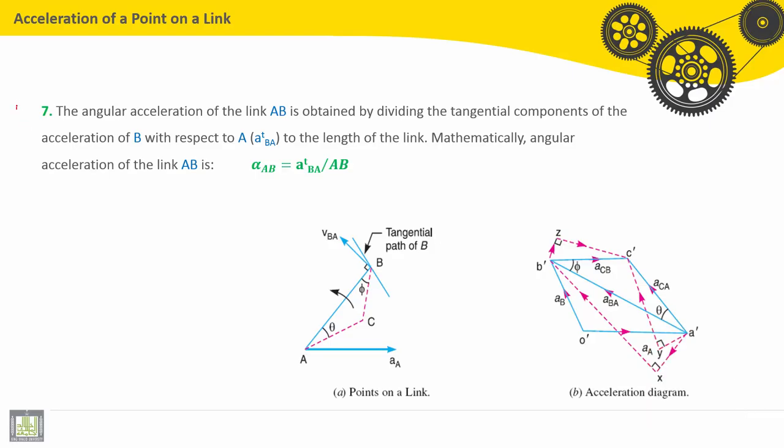Last step, number 7: The angular acceleration of the link AB should be calculated. It can be obtained by dividing the tangential components of the acceleration of B with respect to A, ATBA, to the length of the link AB. So mathematically, angular acceleration of the link AB, alpha AB, is equal to ATAB divided by AB.